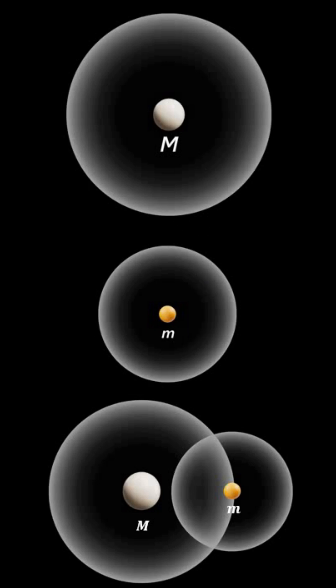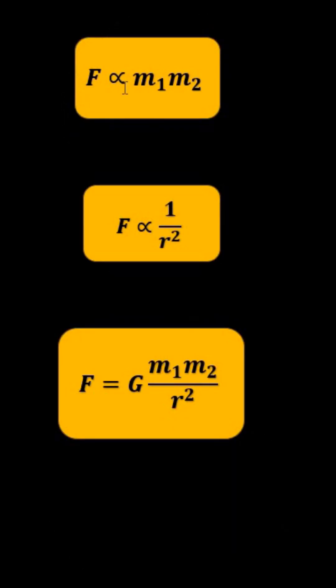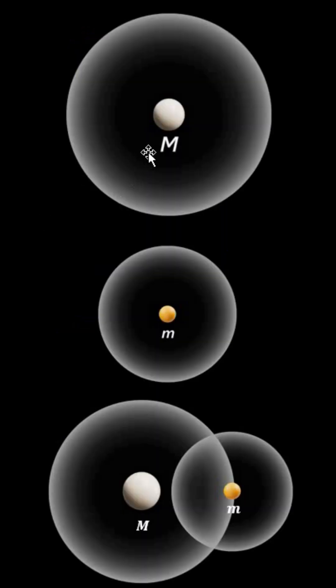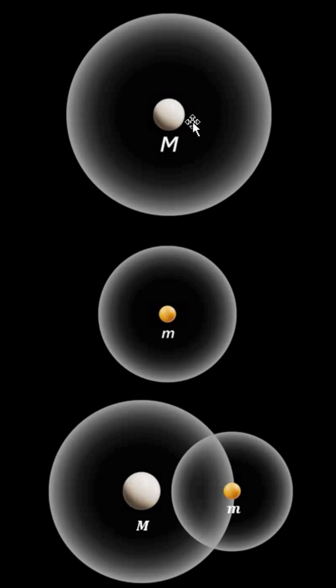The gravitational force is directly proportional to the product of two masses. If there are two objects of mass m1 and m2, it is the product of the two masses, and inversely proportional to the square of the distance between them, that gives us the gravitational force. Similarly, the intensity or strength of the gravitational field is directly proportional to the mass of the object — the greater the mass, the greater the strength of the gravitational field. The gravitational field strength also depends on the distance from the mass: as we move away, the intensity decreases; as we move closer, the intensity increases.